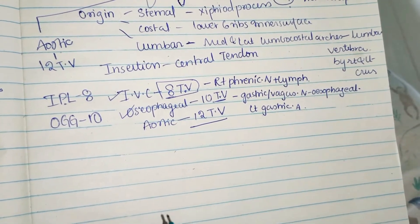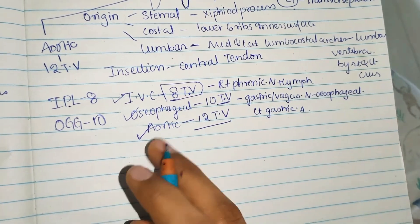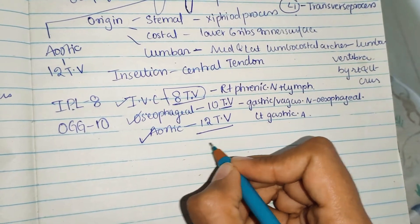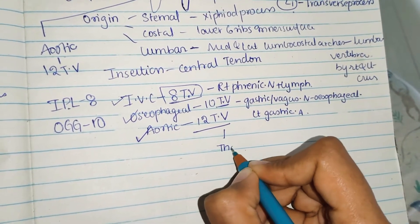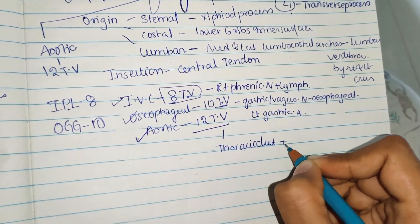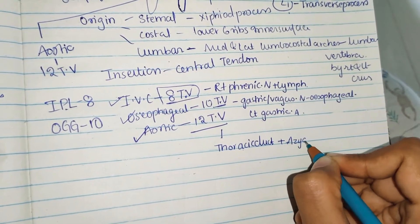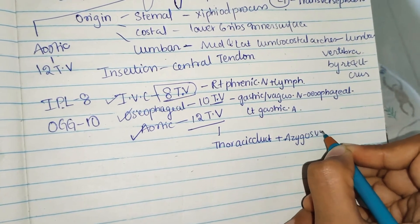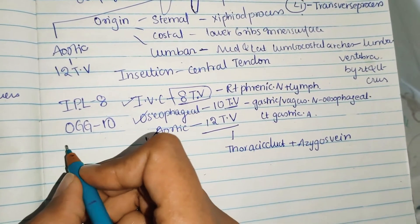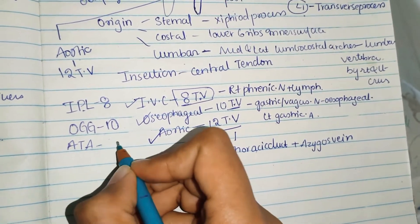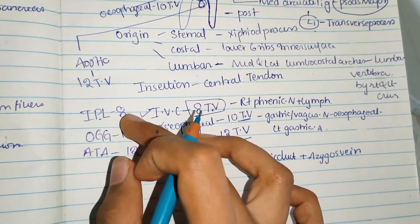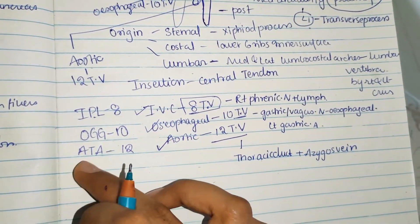Through the aortic opening at T12, the structures passing are: the aorta, the thoracic duct, and the azygos vein. To remember this, use the mnemonic ATA — Aorta, Thoracic duct, Azygos vein — at 12 o'clock. Summary: IPL at 8, OGG at 10, ATA at 12.